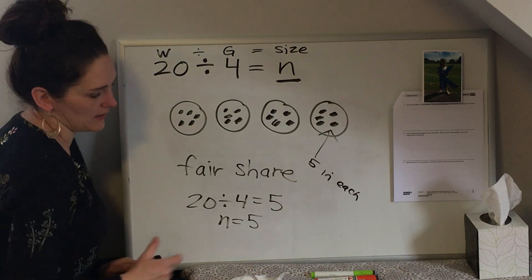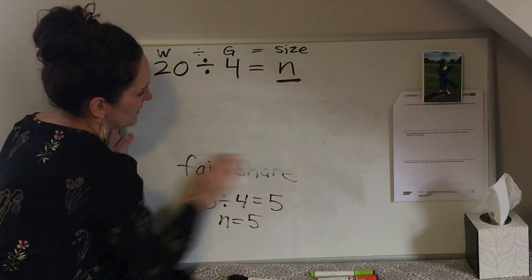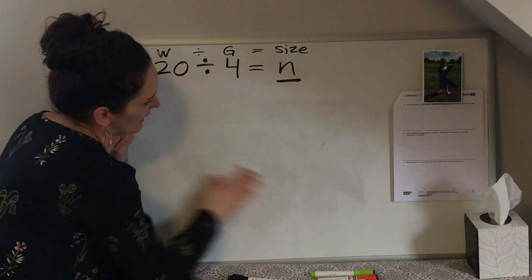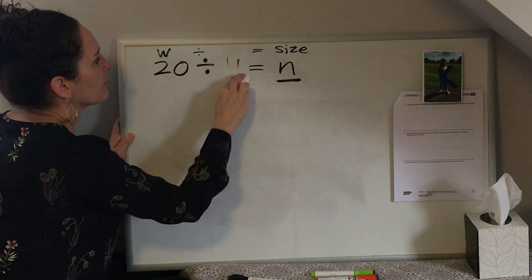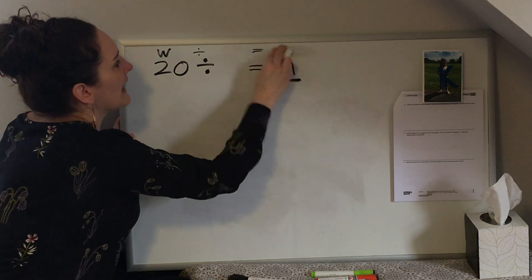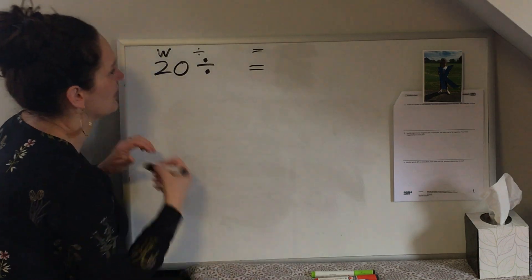The other way that you would draw it is if you have to do a count by. A count by is a little bit different. In a count by the numbers are in a little bit of a different order. For example, when you're doing a count by you know your size of your groups but what you don't know is your number of groups.